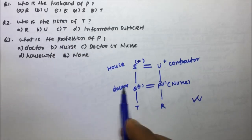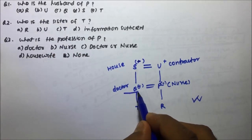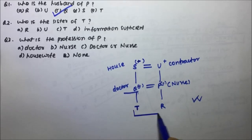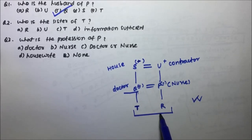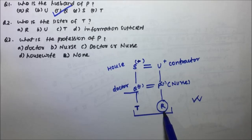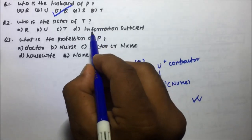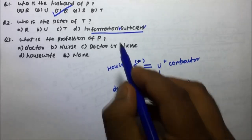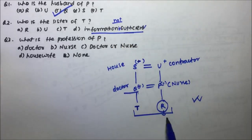Now let's answer all three questions. Who is the husband of P? Q will be the husband of P, and Q is a doctor, so option C is the correct answer for question one. Who is the sister of T? T and R are siblings because their parents are Q and P. However, R's gender is not known — R may be male or female. So if R is female, R is sister of T; if R is male, R is brother of T. Information is not sufficient, so option D is the correct answer.